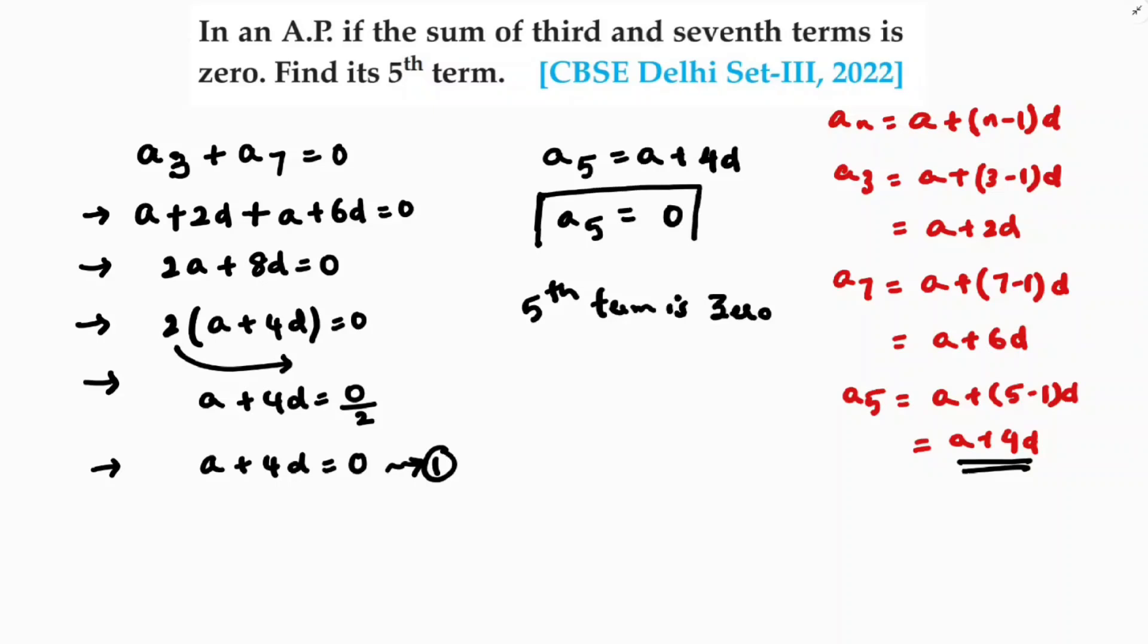So in this way we need to find. This problem is based on the nth term of AP formula: a plus n minus 1 into d.